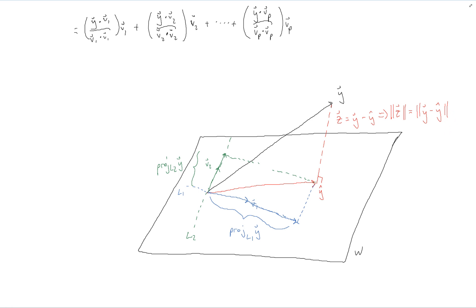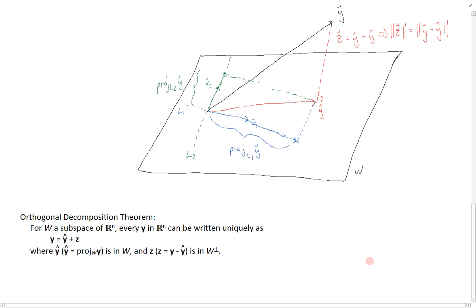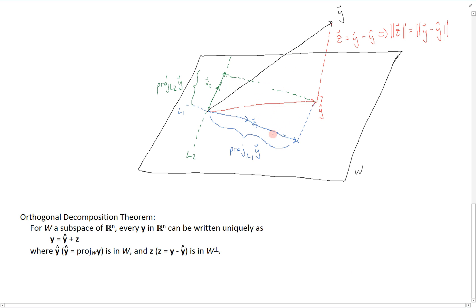This leads to the orthogonal decomposition theorem. The theorem states that for W, a subspace of R^n, every y in R^n can be written uniquely as y equals y-hat plus z, where y-hat — the projection of y onto W — is in W, and z, which equals y minus y-hat, is in W-perp, the orthogonal complement of W. This is exactly what we saw in the illustration: y-hat is in W since it is made up of components of the basis vectors defining W, and z is orthogonal to W by construction.